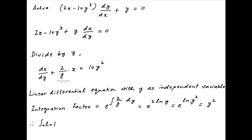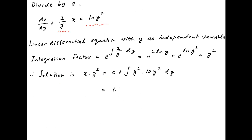Therefore, the solution of the differential equation is given by x times the integration factor y square is equal to the constant of integration plus integral of the integration factor y square times the right hand side of the differential equation which is 10y square dy. The right hand side is equal to c plus 10 times integral of y raised to the power 4 dy, which is equal to c plus 2 times y raised to the power 5.